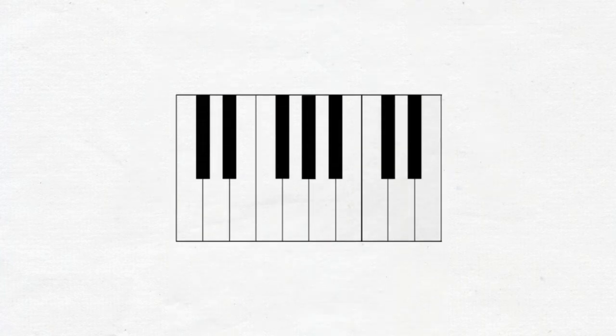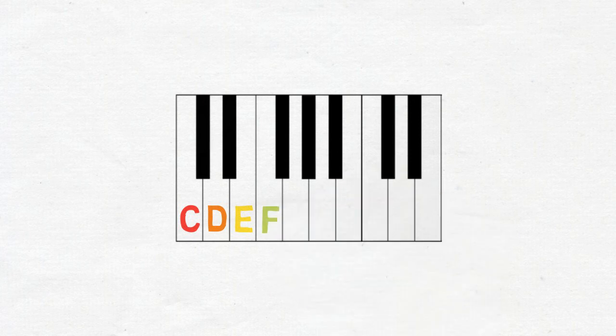Each time you move one piano key to the right, you go to the next letter. So after C will be note D and then note E and then look at that, the next note is F.